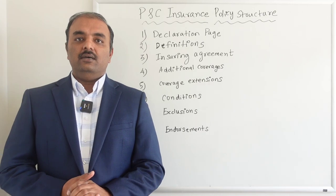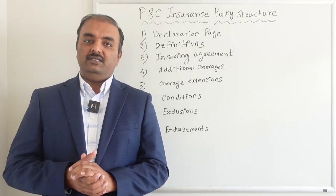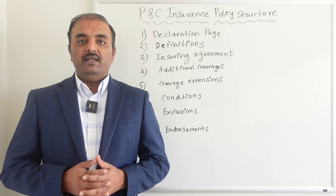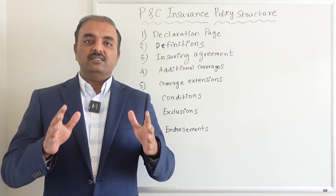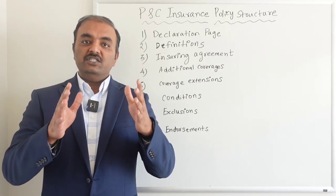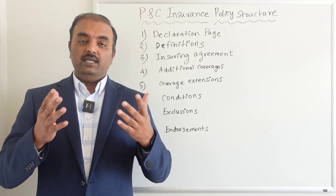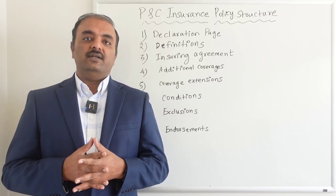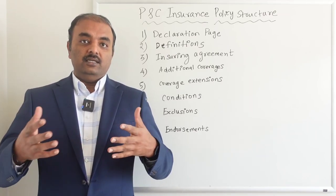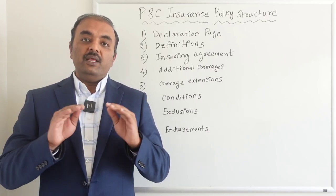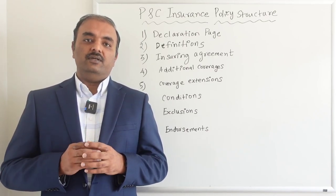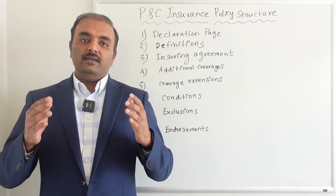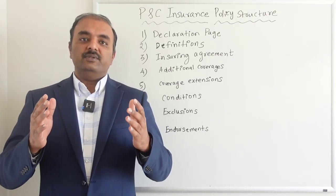The first page is the declaration page. The declaration page has unique, specific details about you the insured, like the named insured, name of the insured, the location being insured, the overall premium for that policy, and the coverage limits — details that are specific to you.